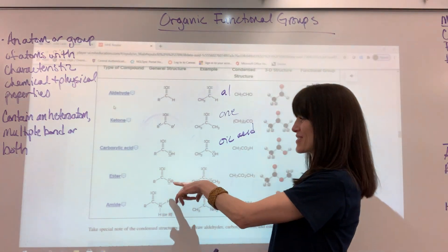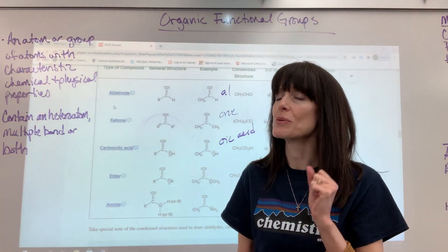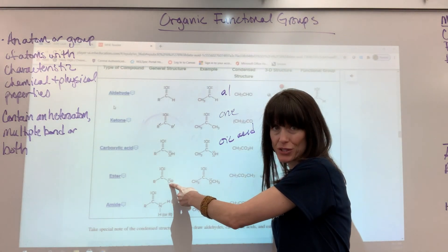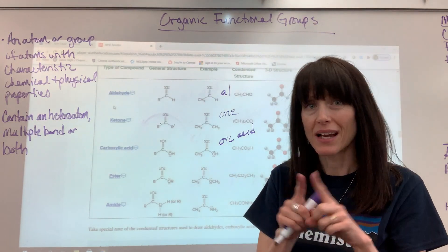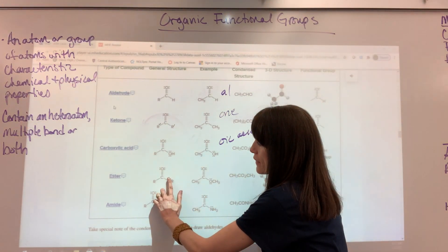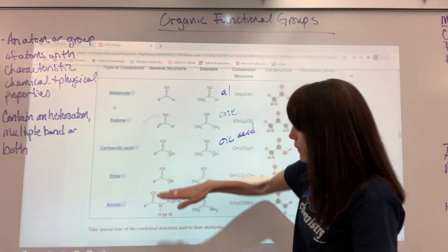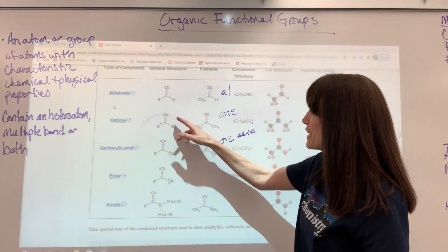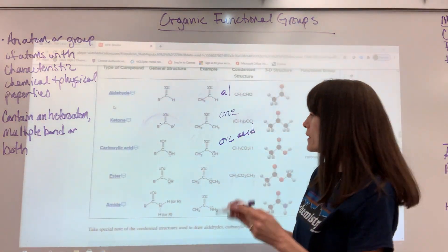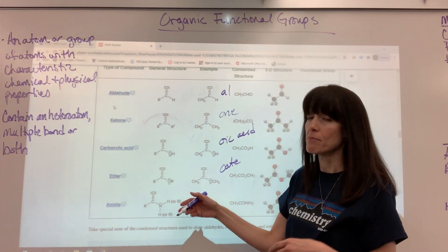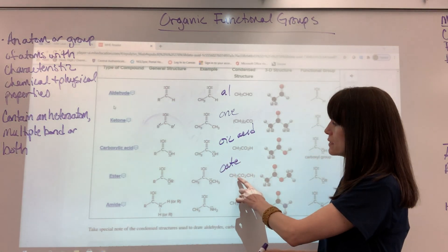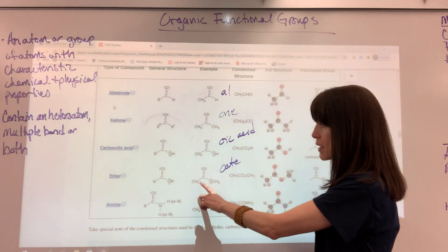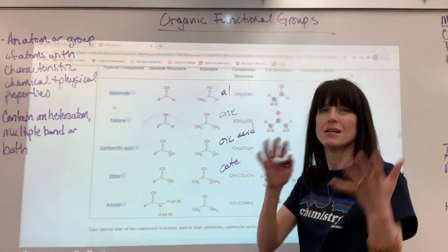An ester is going to occur somewhere in the middle — it will never be the last carbon in the chain. It has a double-bonded oxygen and then a single-bonded oxygen somewhere in the middle. It looks like the combination of a ketone and an ether. The suffix is -oate. In condensed or skeletal structures, when you see C with O2 in the middle, you'll remember it's a double-bonded oxygen and then a single-bonded oxygen — that's your ester.